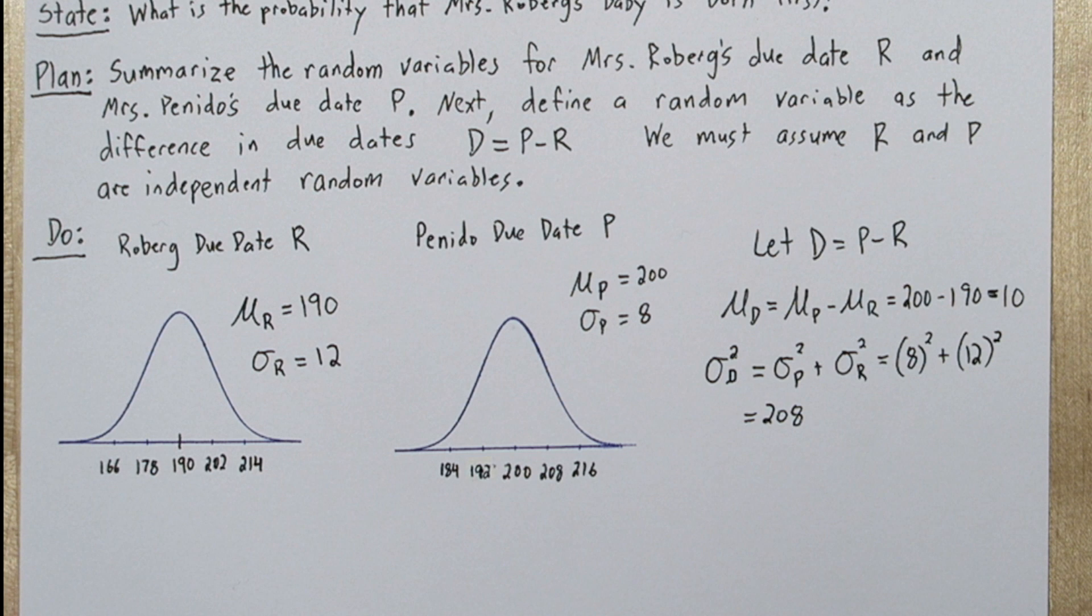Now notice, even though our random variable is the difference between random variables, the variance is actually the sum of the variances of the other random variables. Anytime you're combining random variables, you're going to have more variability. So that's why we're adding here, we're increasing the amount of variability, not subtracting.